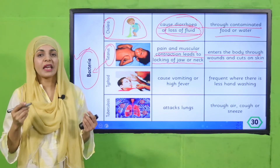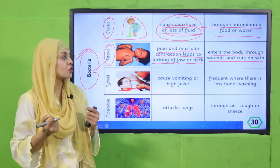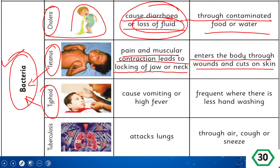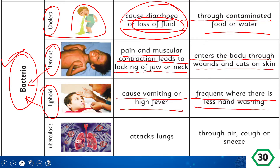Then typhoid, also caused by bacteria. It causes excessive vomiting and high fever. It spreads in places where there is less hand washing — if you wash your hands less frequently, these bacteria can enter your body and cause typhoid.